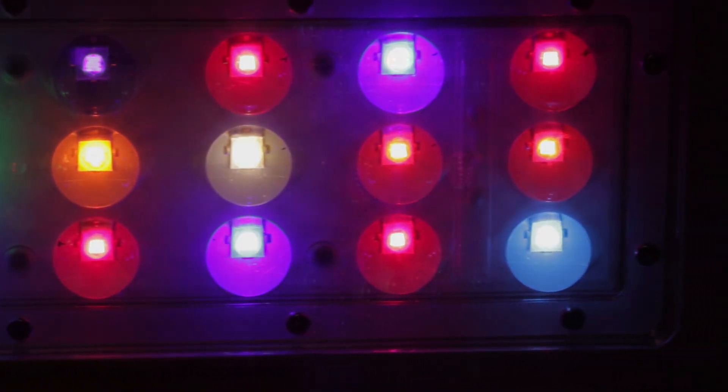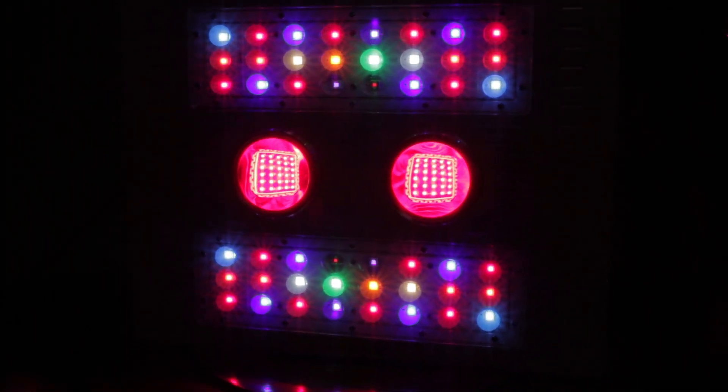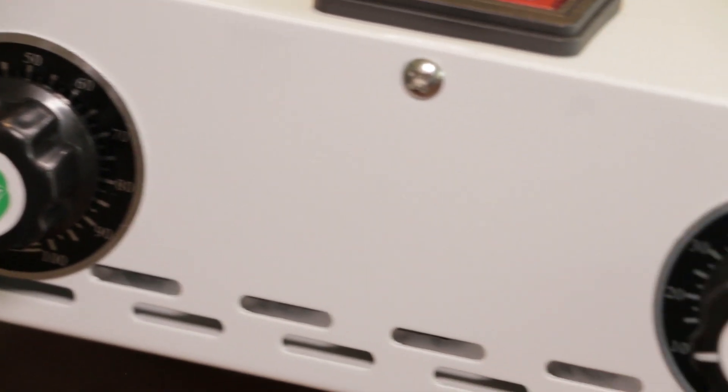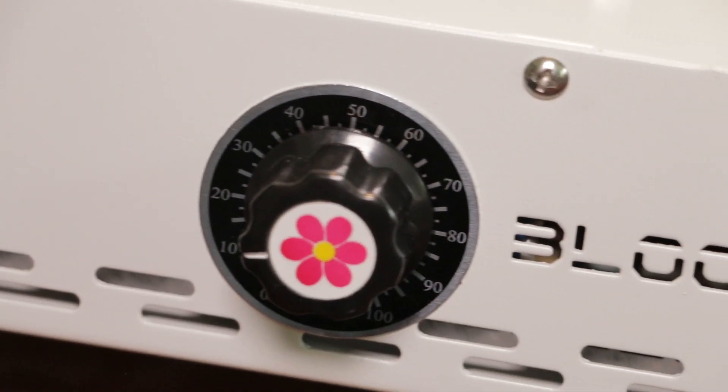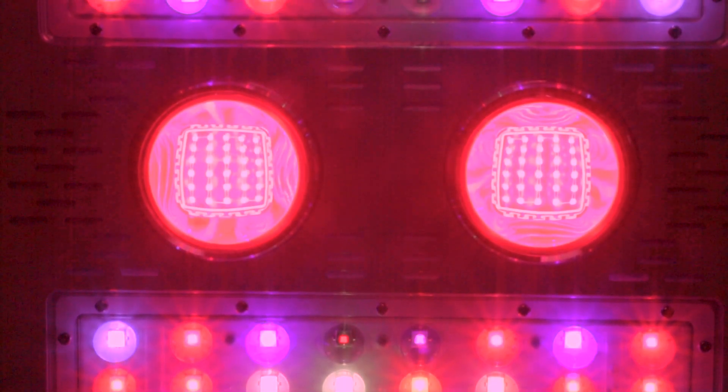Both the large LED cobs and the small LEDs are covered by 90 degree lenses. The smaller LEDs are all controlled by one dimmer switch which is specifically for the vegetative stage of growth. The other dimmer switch controls the two large LED cobs for the flowering stage which are a very bright pure red color.